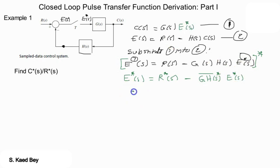If we continue finding E star of s, moving this to the left hand side and taking E star of s as common factor, we end up with E star of s times one plus G H star of s equals to R star of s. So solving for E star of s we get the result.